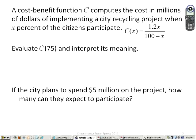Here is a business application. The cost benefit function C computes the cost in millions of dollars of implementing a city recycling project when x percent of the citizens participate. So the cost is our output of our function. C is our output. That represents the cost in millions of dollars, and the x represents what percent of the population are participating in the project.